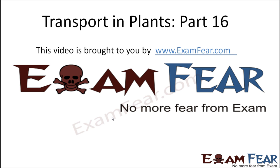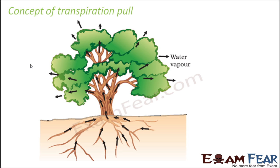This video on transport in plants part 16 is brought to you by ExamFear.com. When we talk about the concept of transpiration pull, water loss happens from the leaves through the stomata. Whenever the stomata opens, some water is lost by evaporation in the form of water vapor to the surroundings. Whenever this water is lost, a pull is experienced all the way down to the root hairs.